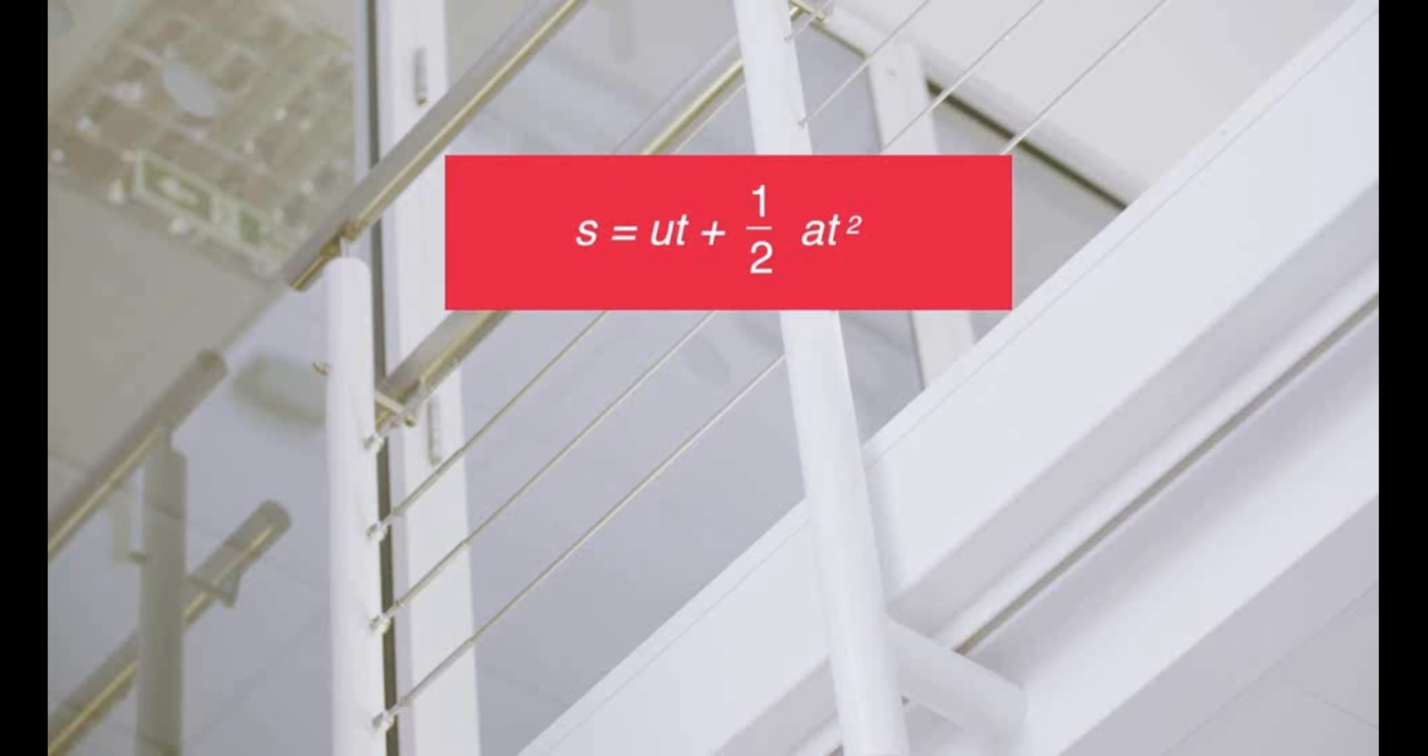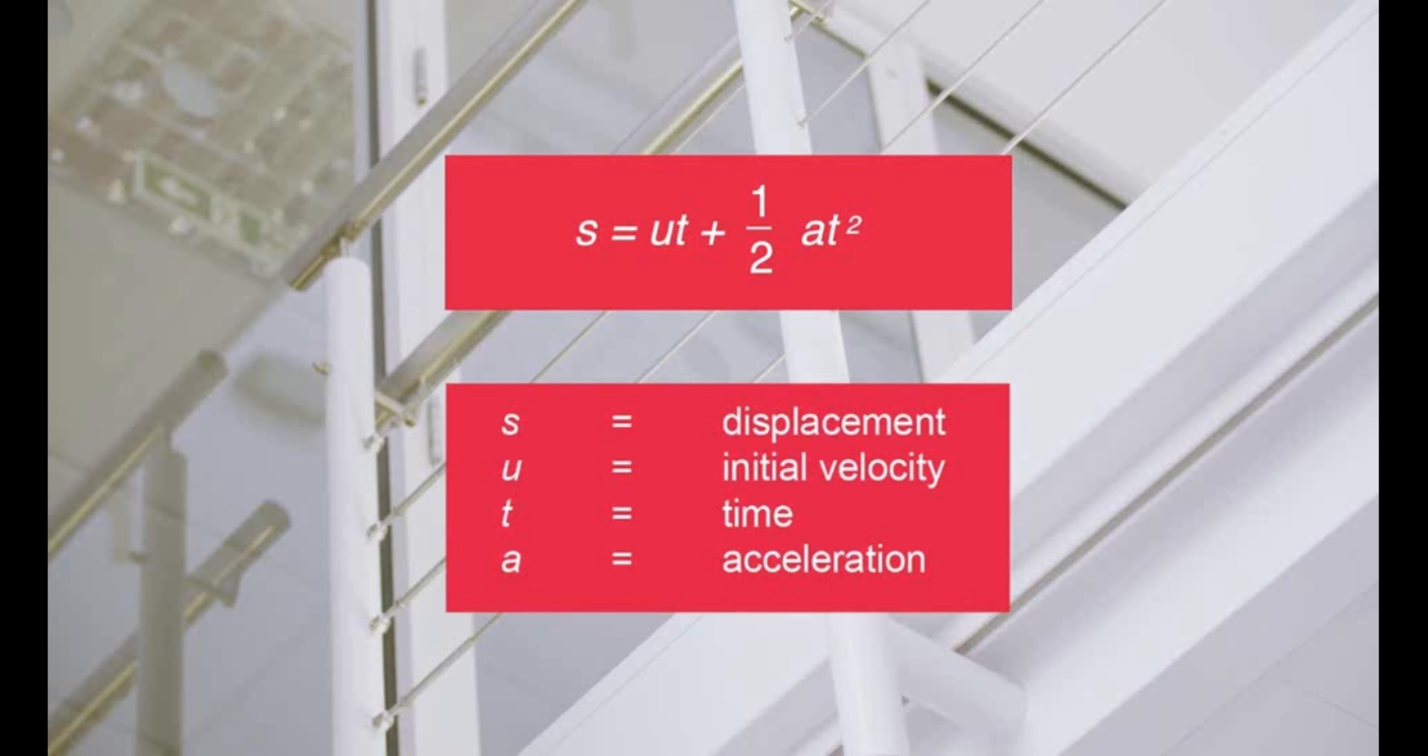The displacement of the ball and the time taken to fall are both known. It is therefore possible to calculate a value for the acceleration of free fall using the equation s equals ut plus a half at squared.